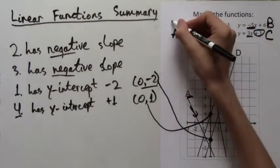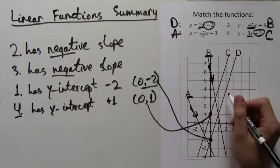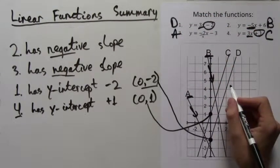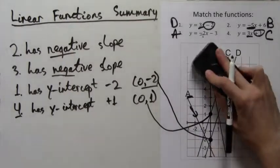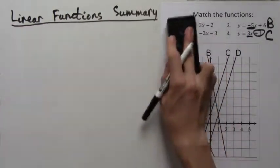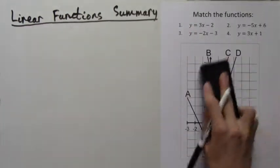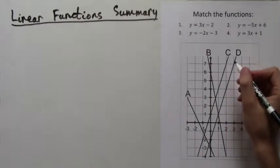This leaves us with only one option for number 1. That it must be D. And indeed, the point (0, -2) lies on D, and it should lie on formula 1's line. Now I'll show another way of doing the same problem that is also a good way of thinking about lines.